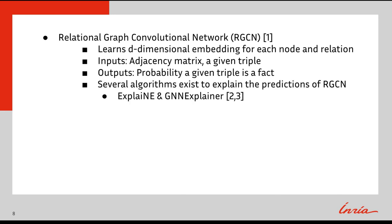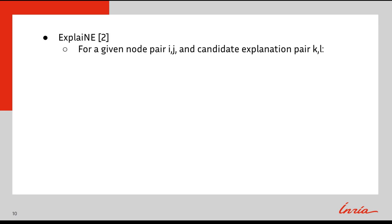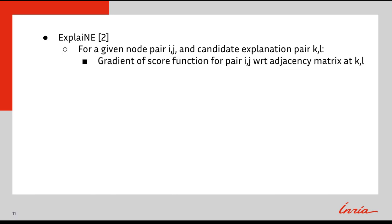Recently, several algorithms have been proposed to explain the predictions of black box graph neural networks. Explaine, for a given node pair ij and a candidate explanation pair kl, computes the gradient of the scoring function for pair ij with respect to the input adjacency matrix at kl.